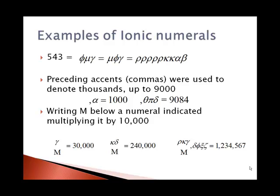To get a number larger than 1,000, they used a comma in front of the number, to get up to 9,000 anyway. So a comma in front of alpha would be 1,000. If there was a comma theta, pi, delta, the comma theta, since theta means 9, the comma theta would be 9,000. Pi means 80, and delta means 4, so comma theta, pi, delta would be 9,084.